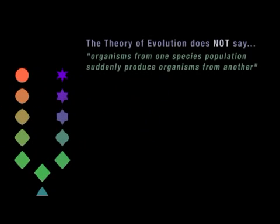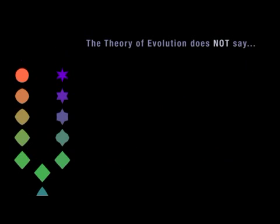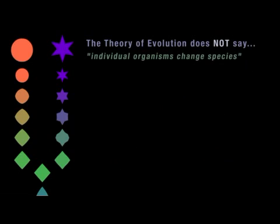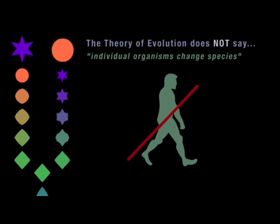The theory of evolution doesn't say that organisms from one species population suddenly produce organisms from another. Dogs don't produce cats. Nor does it say that individual organisms change species — individual apes don't morph into humans.